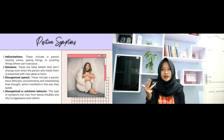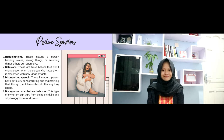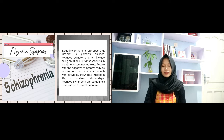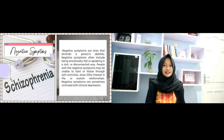Disorganized or catatonic behavior symptoms can vary from being childlike or silly to aggressive and violent. Negative symptoms are the ones that diminish a person's abilities. They often include being emotionally flat or speaking in a dull or disconnected way. People with negative symptoms may be unable to start or follow through with activities, show little interest in life, and also struggle to sustain relationships. Negative symptoms are sometimes confused with clinical depression.